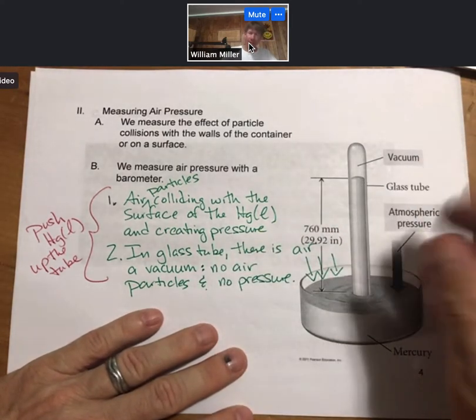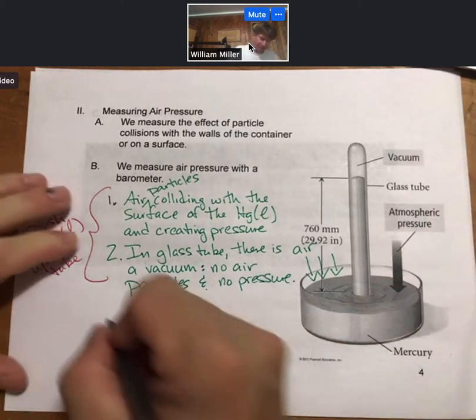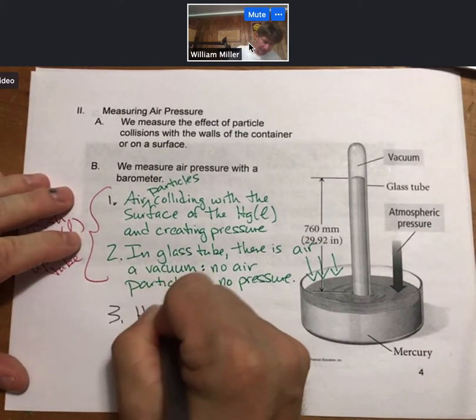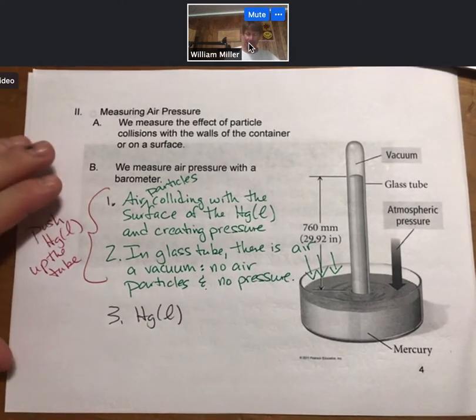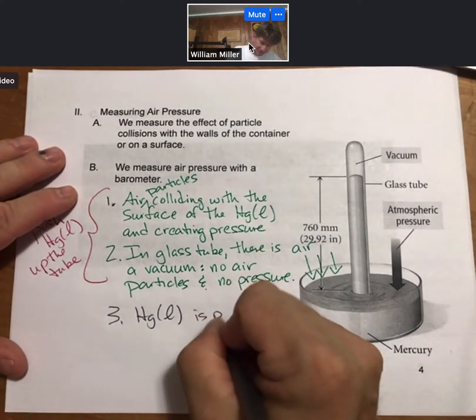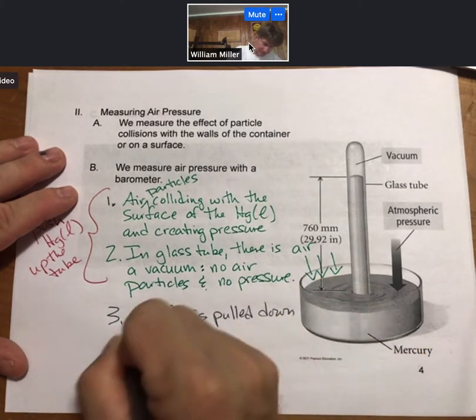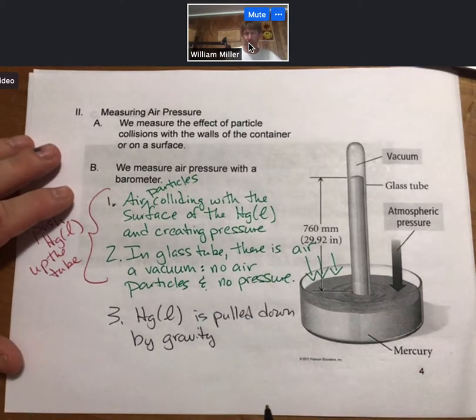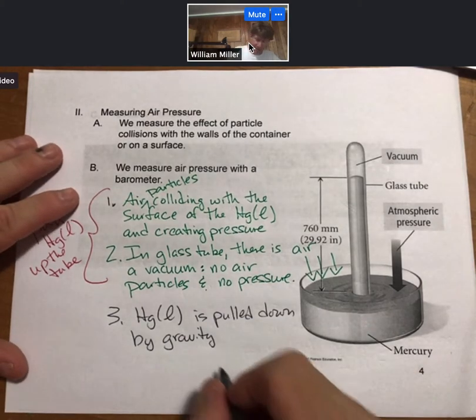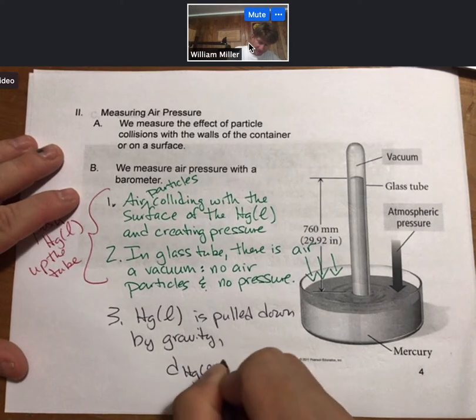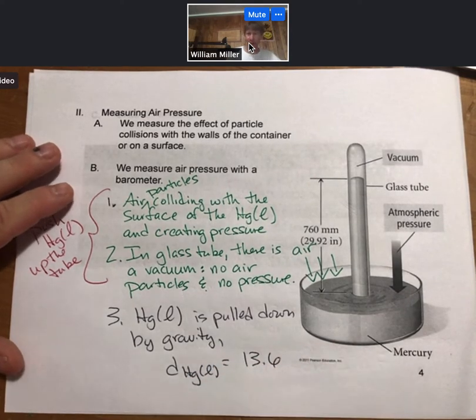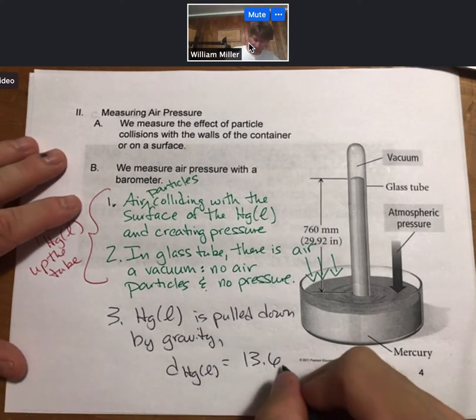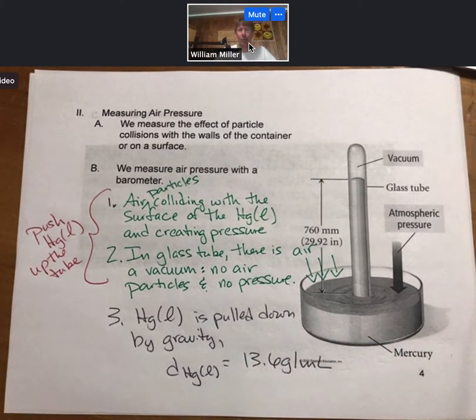So the liquid mercury is pulled down by gravity. And it's pulled down pretty hard because the density of liquid mercury is 13.6 grams per milliliter. So 13.6 times more than water. So gravity acts strongly on the mercury.